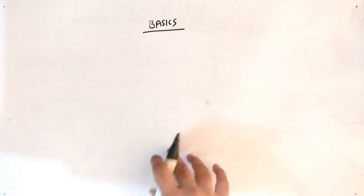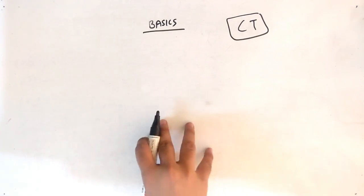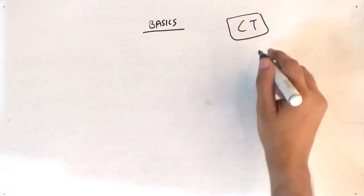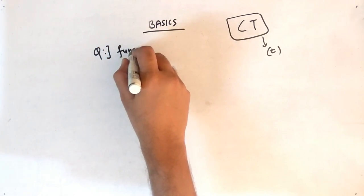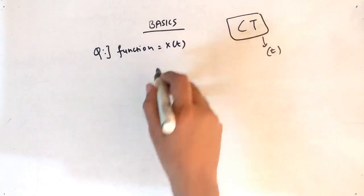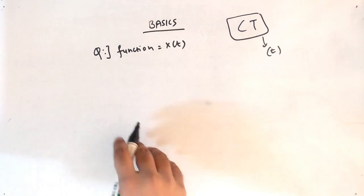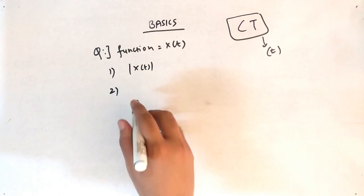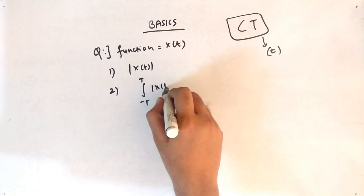Let's start with the basics. I will talk only about the continuous time signal in this video; the discrete time signal will be covered in the next video. Continuous time signals are represented by the t notation. From the question you get some function x(t), and using that you have to find the energy and power. First step: take the mod of x(t). Second step: integrate — with limits minus T to T — the square of mod of x(t).